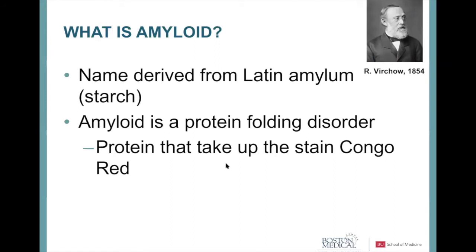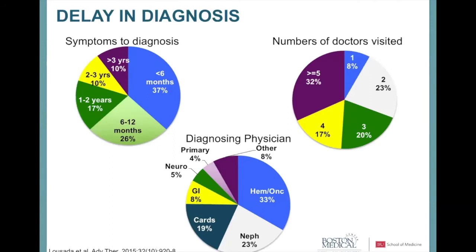What we know now is that amyloid is not a sugar but a protein problem. It's characterized pathologically by any protein that takes up a special stain called Congo red. Amyloid is a misfolded protein — in this patient's case, the lambda light chain misfolds and deposits in tissue in a special orientation that takes up this Congo red stain.